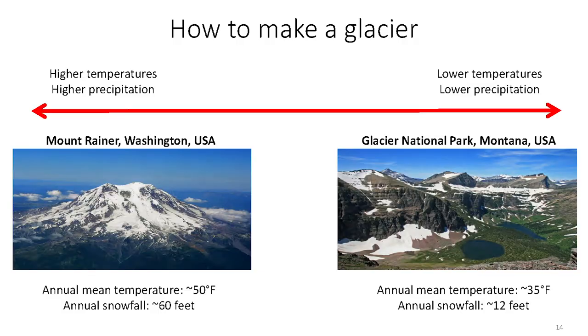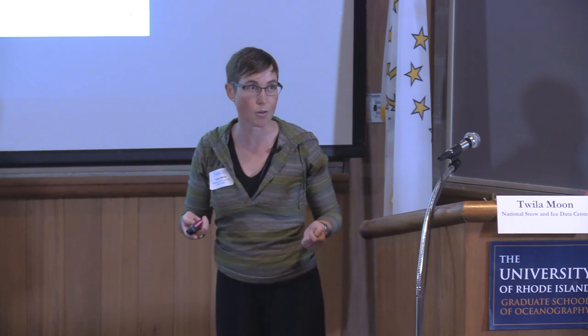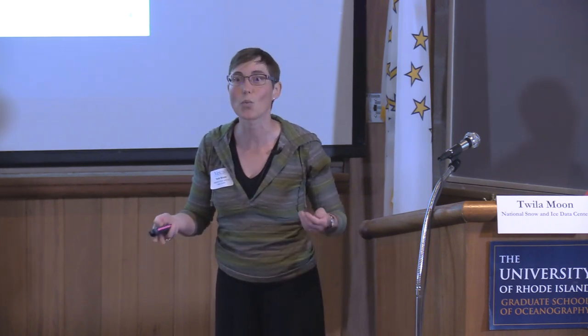On the other end of the spectrum, we can have glaciers in places where we have very low precipitation. This is Glacier National Park in Montana, my home state. We get only about 12 feet of snowfall per year, but because we have cold average temperatures, we still can't melt all of that snow. There are places in East Antarctica that are technically a desert, but because the few centimeters of snow that fall each year simply can't melt, we can build up an ice sheet that is miles thick.